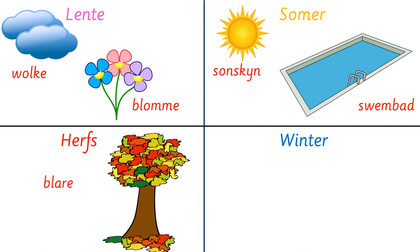All right, next one — we've got herfs. Let's say herfs three times: herfs, herfs, herfs. Okay, and you are going to draw a beautiful herfs boom — a herfs tree with lots of different colored leaves. And leaves in Afrikaans are blare. So you're going to write the word blare next to your leaves. Okay, that's all for herfs.